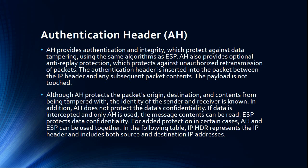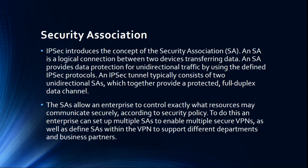In the following table, IPHDR represents the IP header and includes both source and destination IP addresses. Security Association: IPsec introduces the concept of the Security Association (SA). An SA is a logical connection between two devices transferring data. An SA provides data protection for unidirectional traffic by using the defined IPsec protocols. An IPsec tunnel typically consists of two unidirectional SAs, which together provide a protected, full-duplex data channel. SAs allow an enterprise to control exactly what resources may communicate securely according to security policy, including setting up multiple SAs to enable multiple secure VPNs, as well as defining SAs within the VPN to support different departments and business partners.